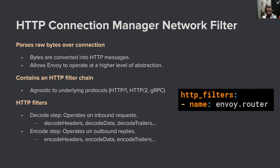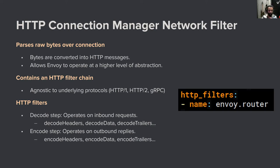A really important network filter is the HTTP connection manager filter, which has the HTTP filters everyone knows and loves. It parses raw bytes like any network filter, but converts those bytes into HTTP message objects, allowing Envoy to operate at a higher level of abstraction — per request rather than per series of bytes. Inside the HTTP connection manager is an HTTP filter chain, agnostic to the underlying protocol whether H1, H2, gRPC, or QUIC. These HTTP filters have a decode step that operates on inbound requests and an encode step for replies. Not all HTTP filters need to do both — they can do one or the other.